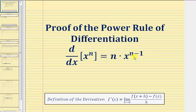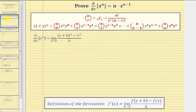This proof uses the binomial theorem, so let's begin by reviewing this. The binomial theorem is used to expand binomials when we have a binomial raised to a whole number power.